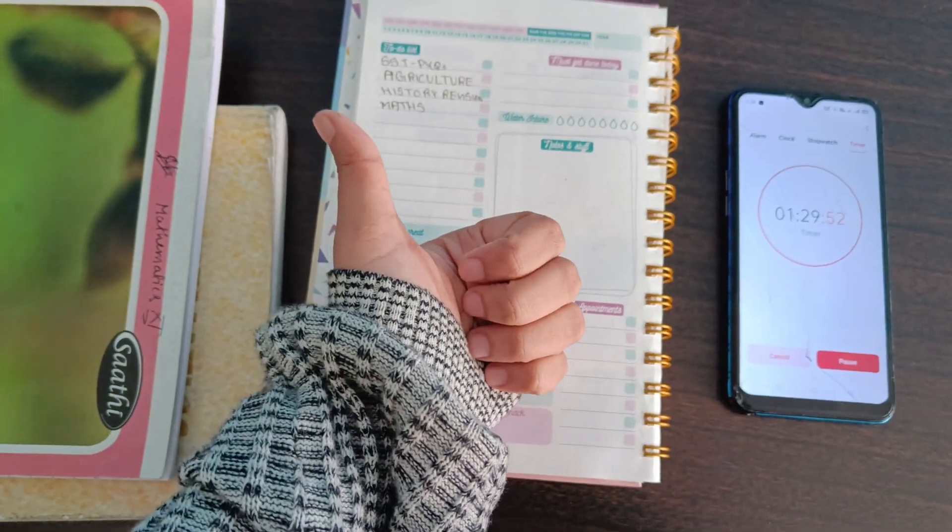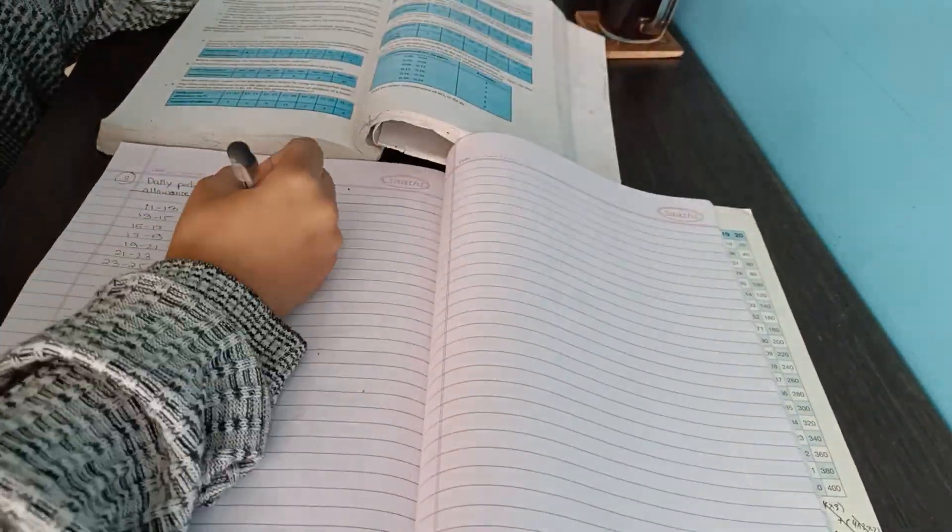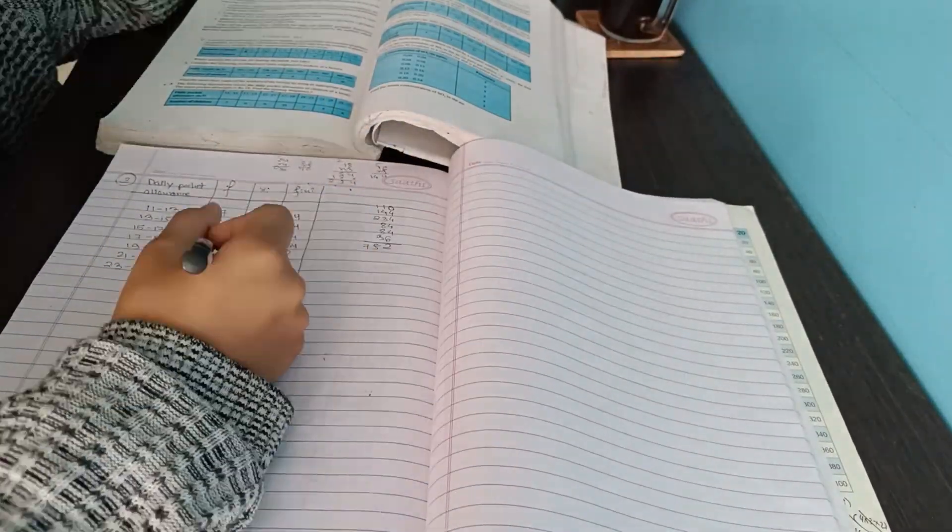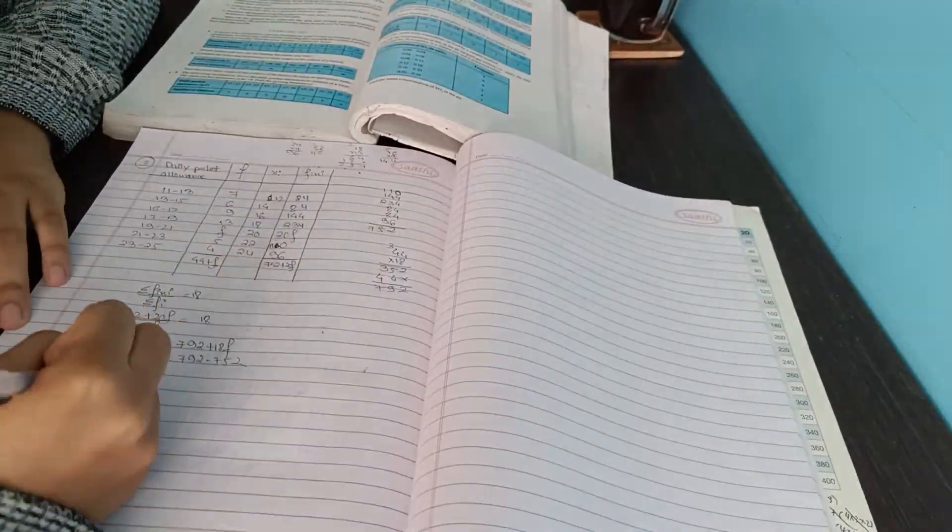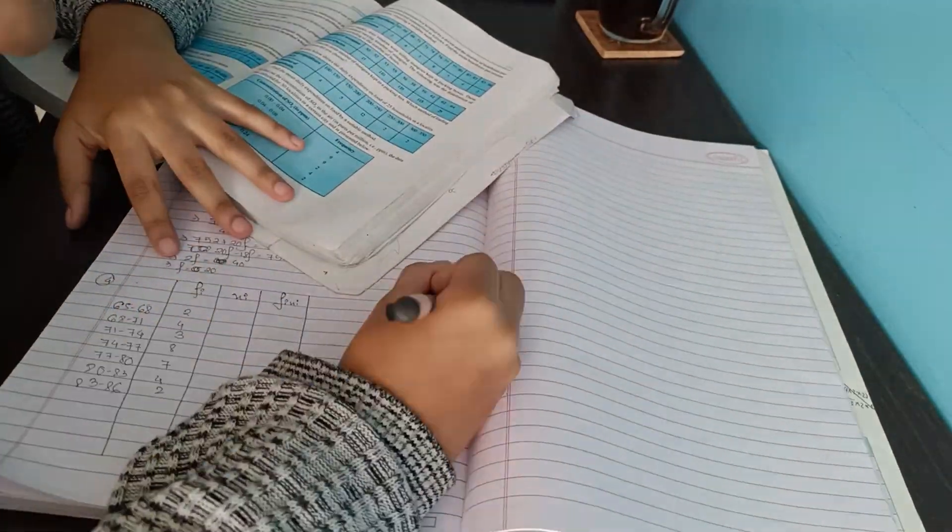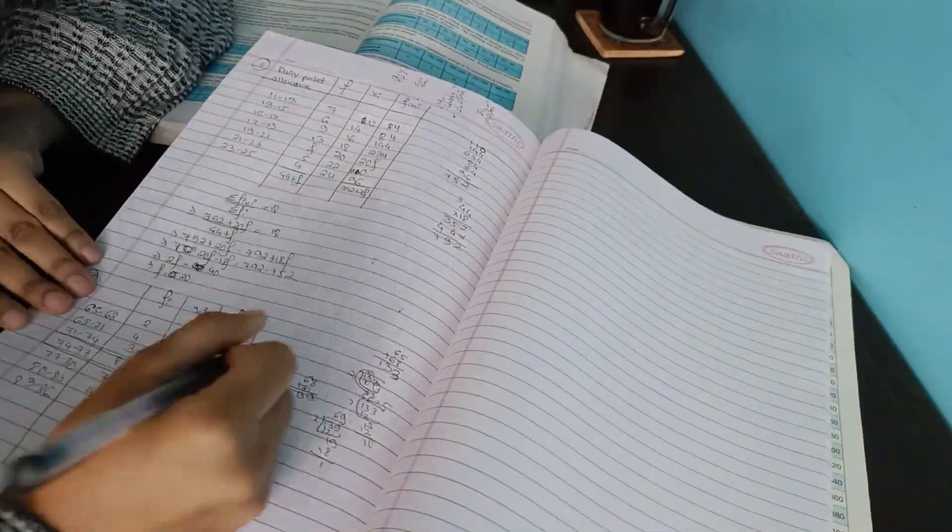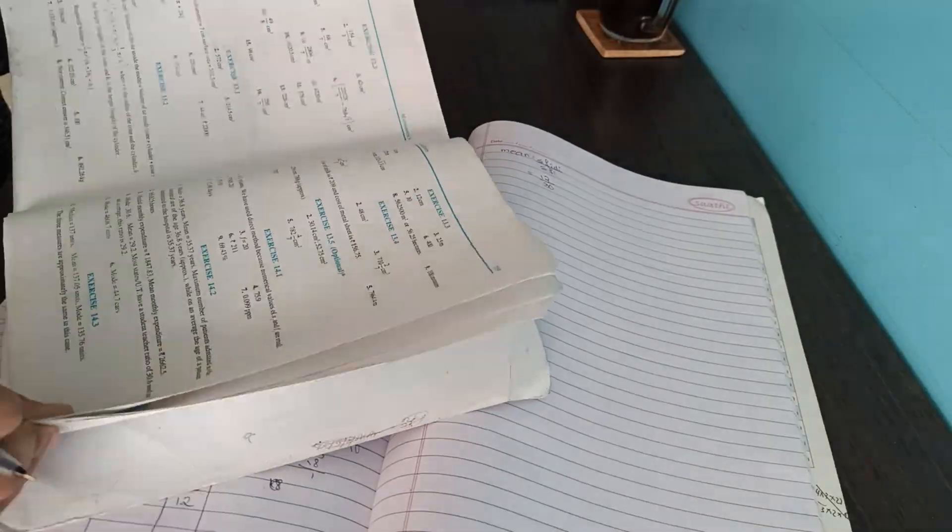So here I was doing the second exercise of the chapter statistics from the NCERT. As I've already mentioned earlier, my weak point is the calculation and I was doing the same mistake here.